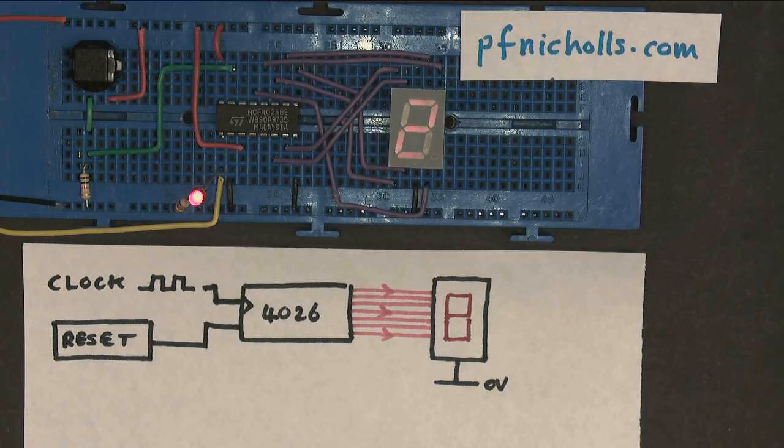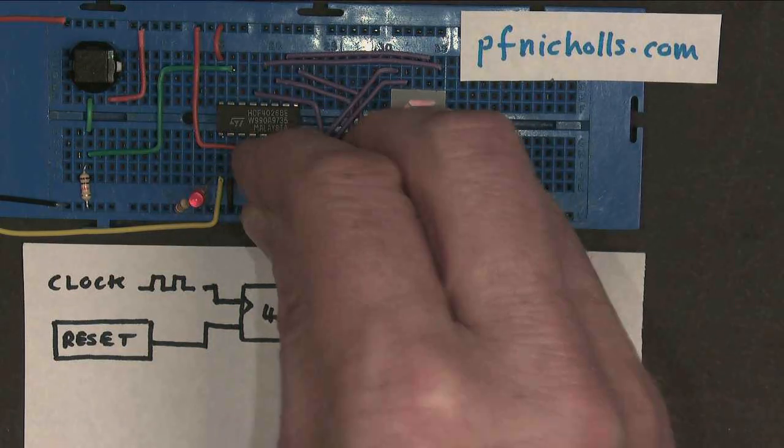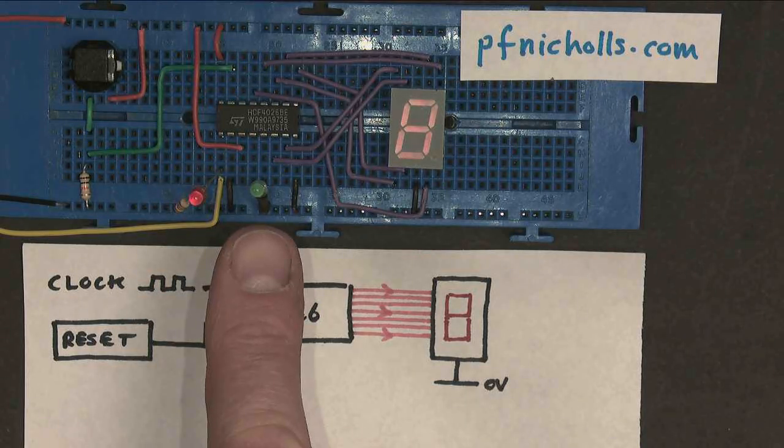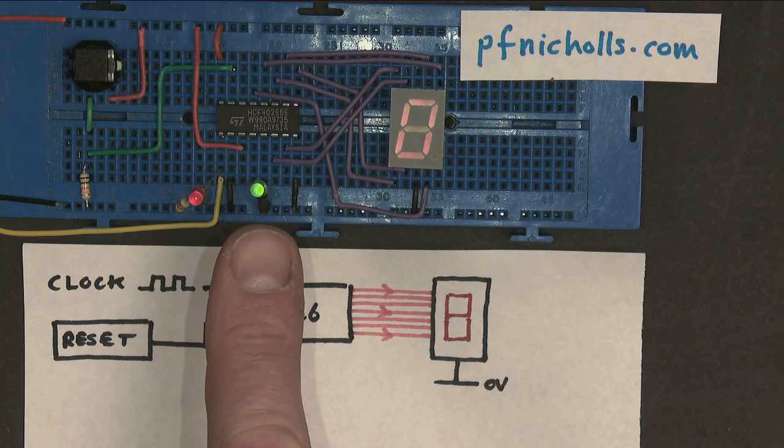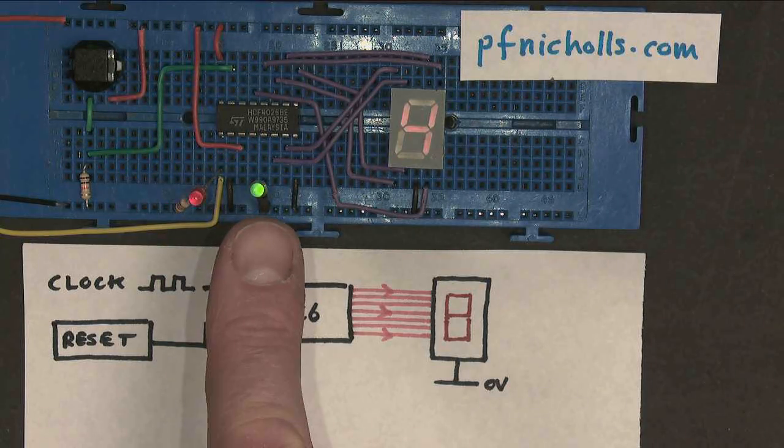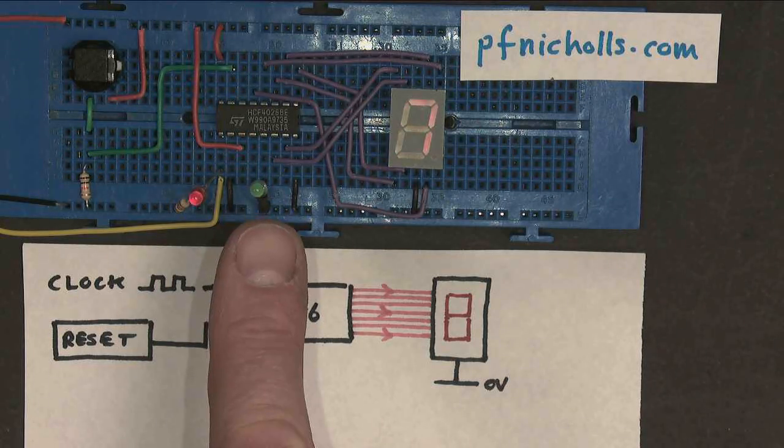There's another useful output on here. This output is a divide by 10 output. I can represent it with another LED, this one here. It's low at the moment, but from 0, 1, 2, all the way up to 4, this output stays high, and from 5, all the way through to 9, this output stays low.